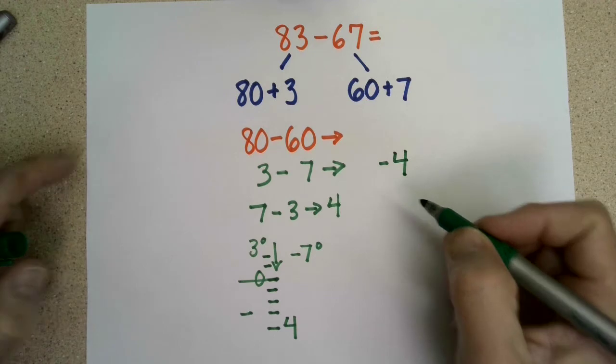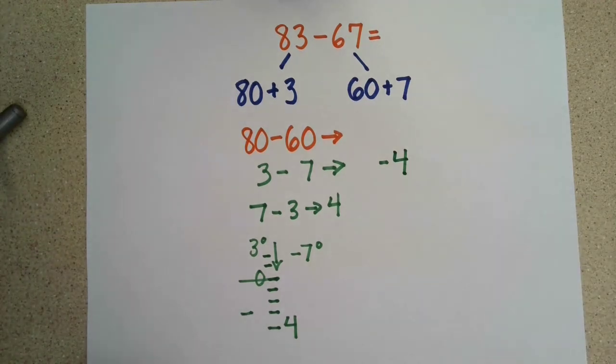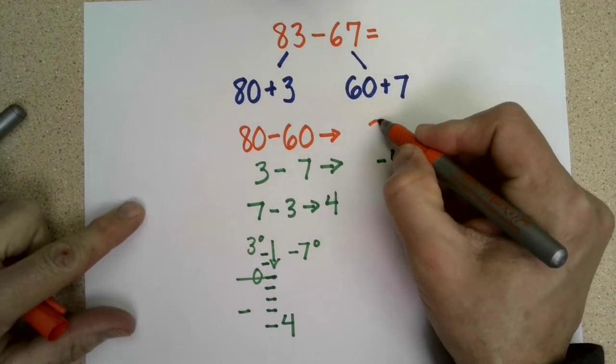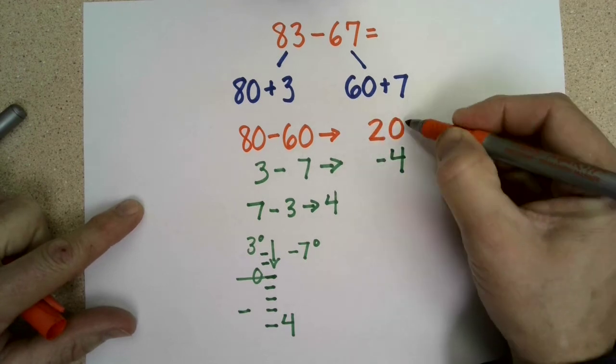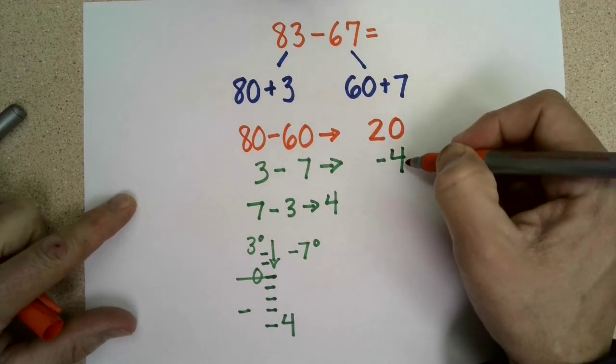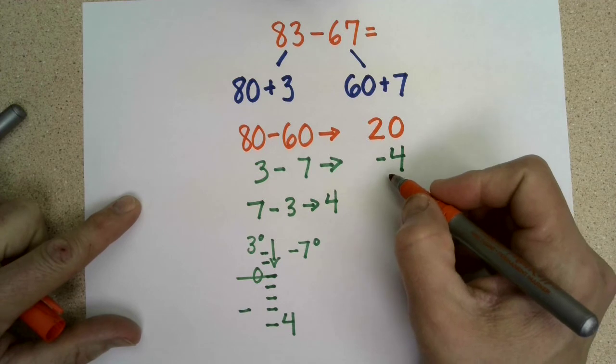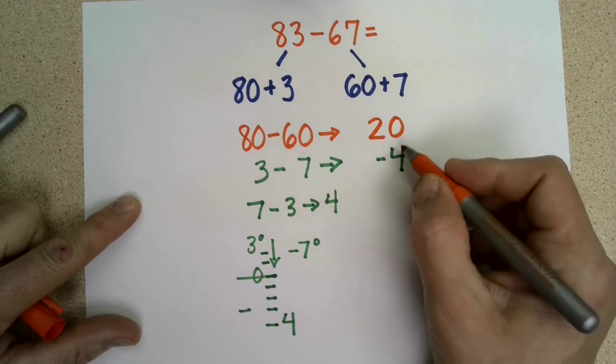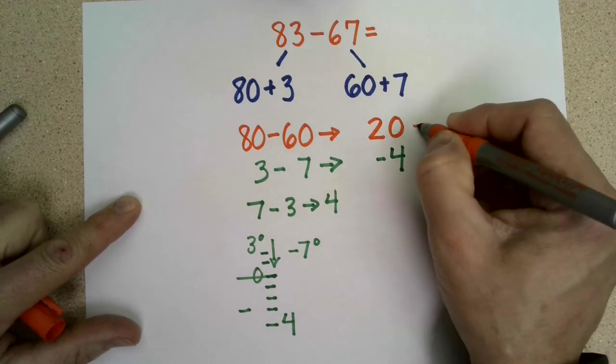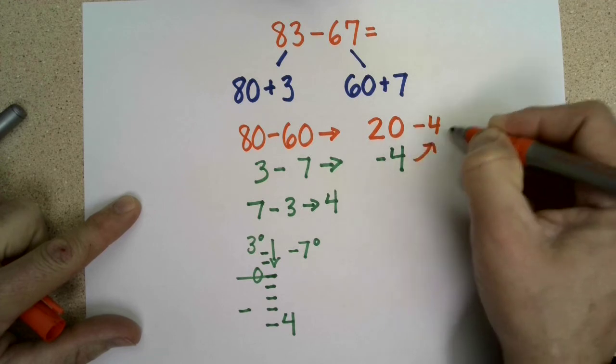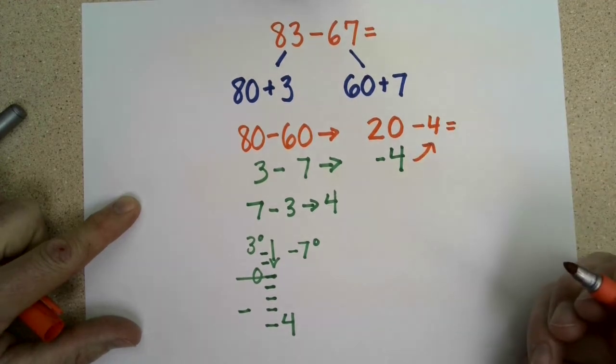So let's think about that and the rest of our equation. 80 minus 60 would be 20. Now we have 20, and we have a negative 4. Well, negative 4 is like saying 20 minus 4.